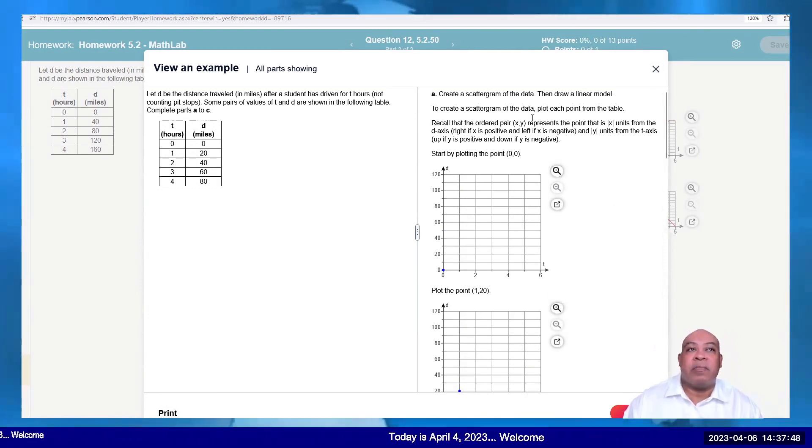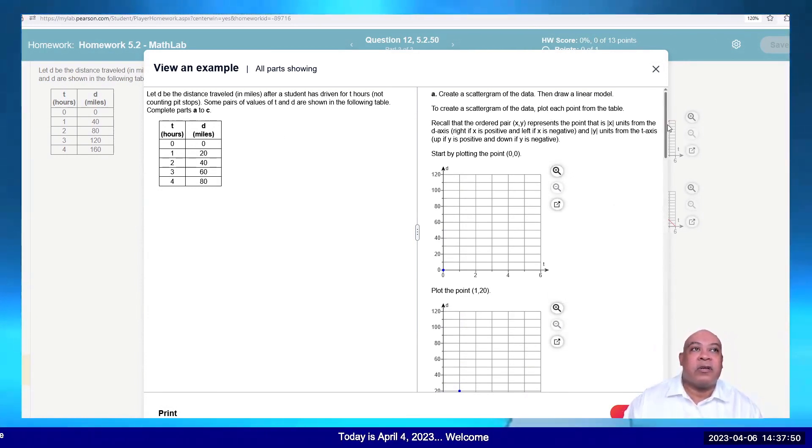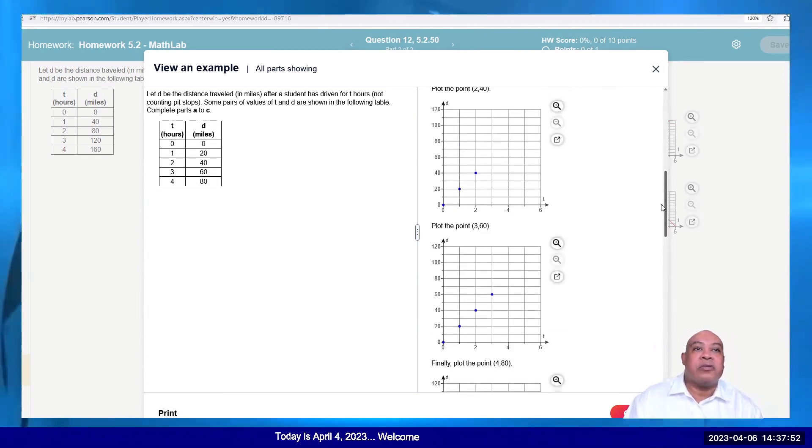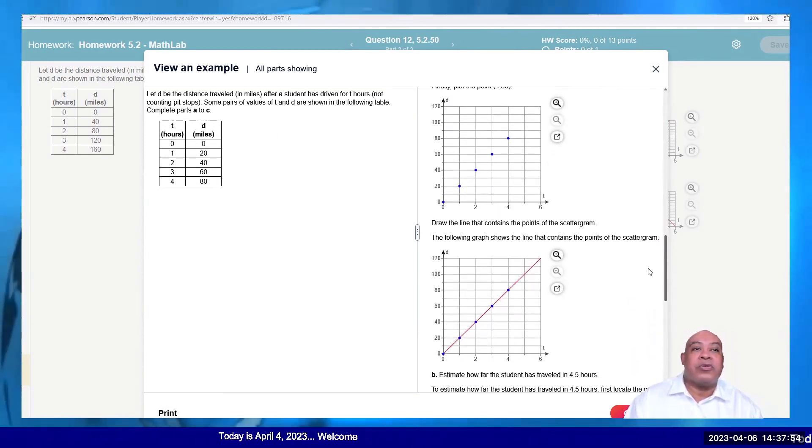So we have a chart here. We have data. We can plot a graph. We have to interpret it. So we plot the points. We draw a trend line.